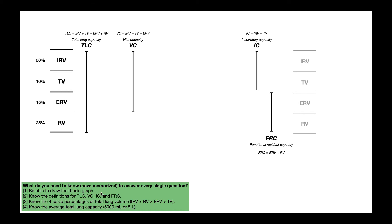If you know all four of these things, do you need to memorize the percentage of vital capacity? No — you can figure it out. Do you need to know the percentage of inspiratory capacity? No, you can figure it out. You can figure out these percentages if you know the basic percentages and formulas. Do you need to know the individual volumes in milliliters for IRV, tidal volume, etc.? Absolutely not — because you know the percentages and the total lung capacity is 5,000 milliliters.